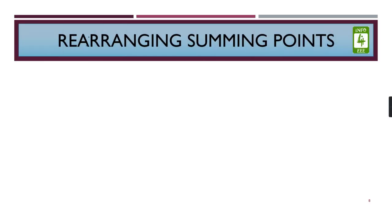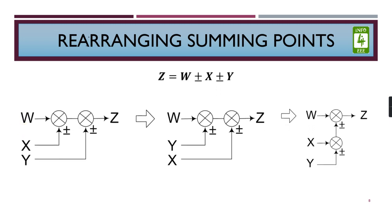Coming to the next slide, that is the rearranging of summing points. Now we can rearrange the summing point like this in two ways. That is, if we are given with W, X, and Y, we can reverse Y and X summing point of Y and X, or we can also perform our operation in this way. That is, first we can add X and Y in the summing point and then we can use their sum as the input to another summing point.